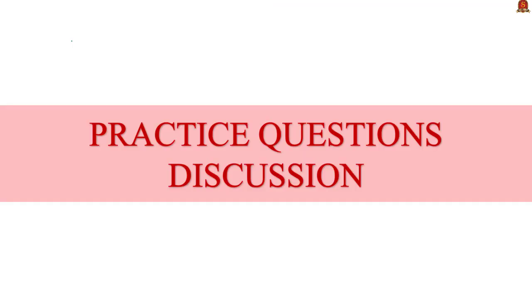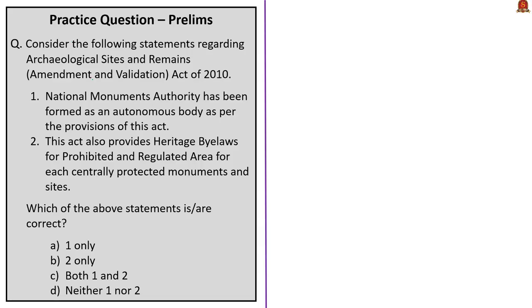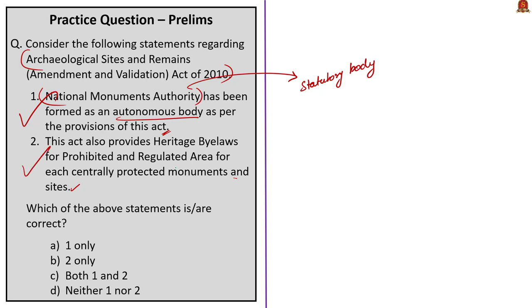Now we come to the practice questions discussion session. The first question is based on the Archaeological Sites and Remains Amendment and Validation Act of 2010. Statement one states that the National Monuments Authority has been formed as an autonomous body as per the provisions of this act — this is correct, as NMA is a statutory and autonomous body. Statement two states that this act also provides heritage bylaws for prohibited and regulated areas for each centrally protected monument and site — this is also correct, as today's entire discussion was based on these heritage bylaws. Since both statements are correct, the final answer is option C: both one and two.